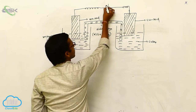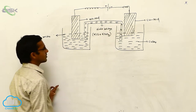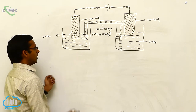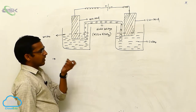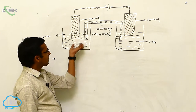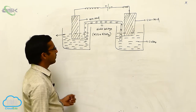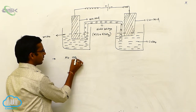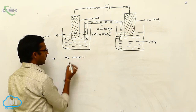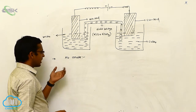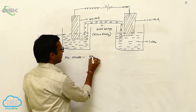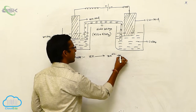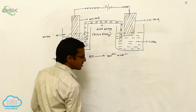One electrode carries positive charge and the other carries negative charge. In this electrochemical cell, one is the cathode electrode and one is the anode electrode. At the anode, oxidation reaction takes place — Zn loses two electrons: Zn → Zn²⁺ plus two electrons. This is the oxidation reaction.